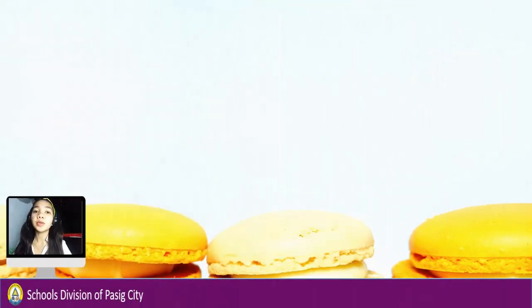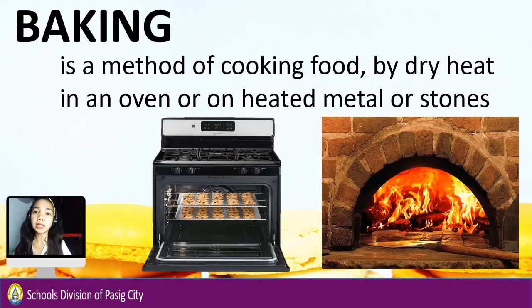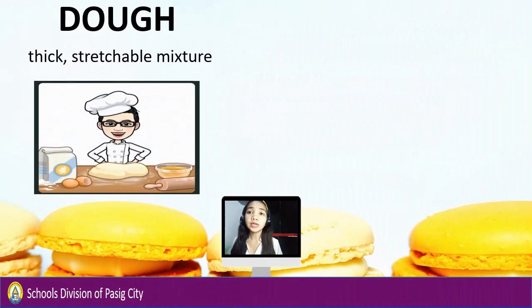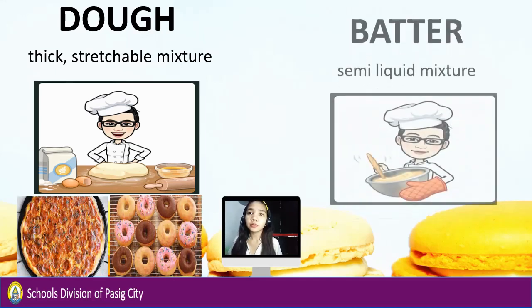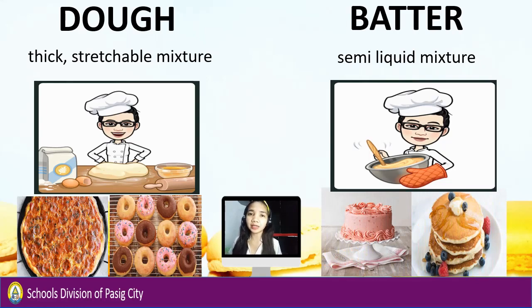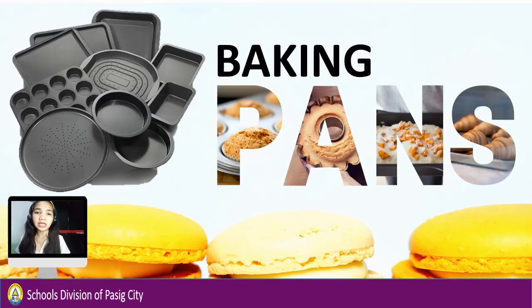We will start the lesson by telling you what baking is. Baking is a method of cooking food by dry heat in an oven or on heated metal or stones. There are two mixtures used in baking: dough and batter. Dough is thick and stretchable — it can hold its shape, like pizzas and donuts. On the other hand, batter is a semi-liquid mixture, just like the ones used in cakes or pancakes. Since batter is a semi-liquid mixture, it needs baking pans; the batter will follow the shape of the pan you use. But there are also baking pans we can use for doughs.